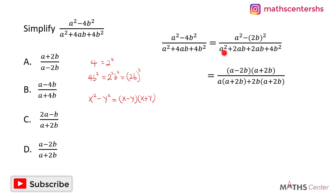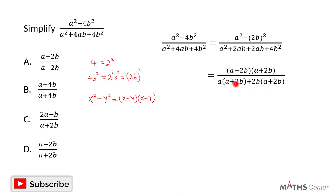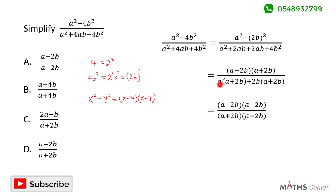On the denominator, the first two terms are a squared and 2ab. The common factor between these two is a, so we bring a out and are left with (a plus 2b) in the bracket. The next two terms are 2ab plus 4b squared. The common factor is 2b, so we bring 2b out and are left with (a plus 2b) in the bracket. Since both brackets contain (a plus 2b), we pick one of them, giving us (a plus 2b)(a plus 2b).